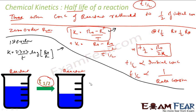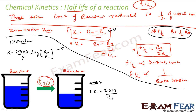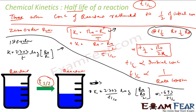At T½, R = R₀/2. Substituting into the first-order formula: K = (2.303 / T½) × log(R₀ / (R₀/2)) = (2.303 / T½) × log 2. Solving, we get T½ = 0.693 / K.